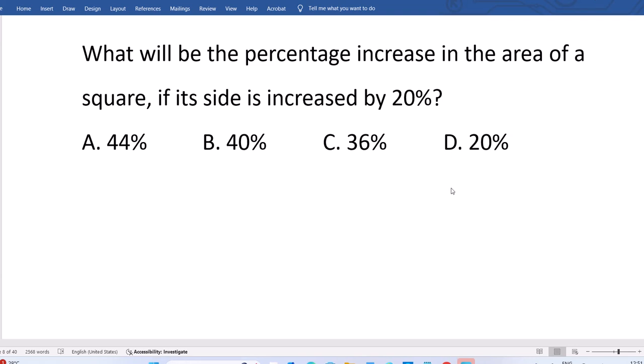This is, we can say, an exam 10 seconds question. So area is side into side, two times 20% increase.